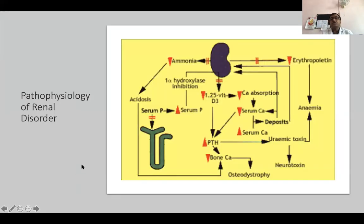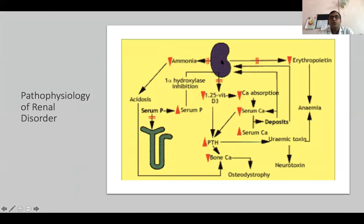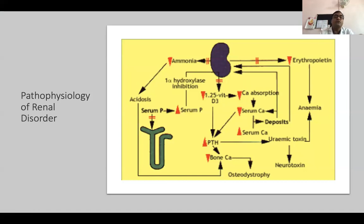Continuing to the pathophysiology mechanism — this is a graphical representation. The kidney produces different types of toxic substances. If they accumulate in the body and the kidney is compromised, it will lead to acidosis and affect the bone, causing osteodystrophy. Phosphorus and calcium are antagonistically related. Vitamin D 1,25 form is very important for calcium absorption. Once the kidney is compromised, the production of active vitamin D decreases, leading to decreased calcium absorption and hypocalcemia. Kidney dysfunction is therefore related to hypocalcemia.